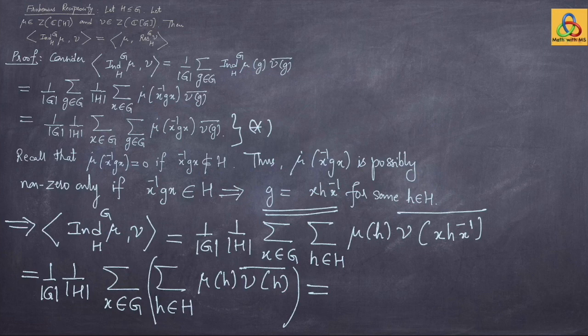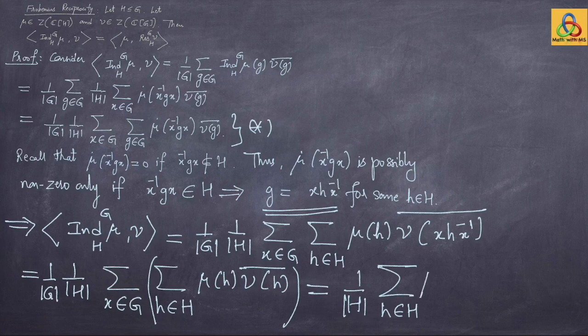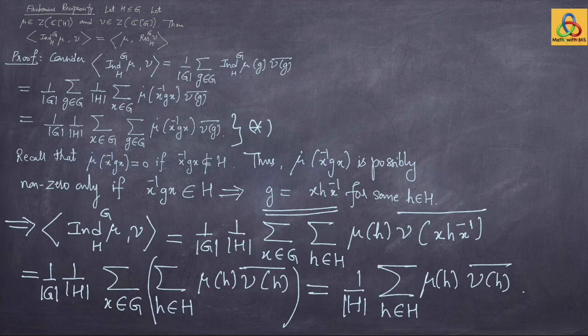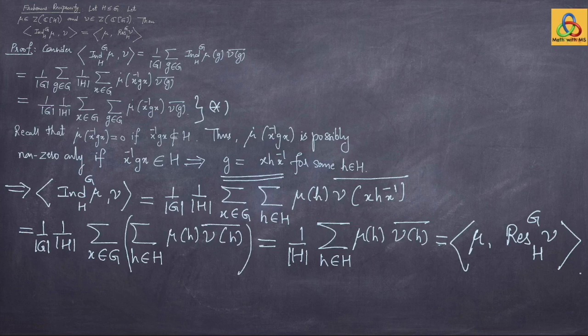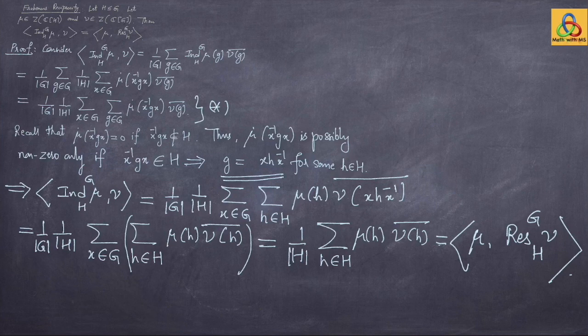What remains is (1/|H|) times the sum over h in H of mu(h) times nu(h)-bar. But this is simply the inner product of mu with the restriction of nu from G to H — since we are varying h only in H. This proves the beautiful result called Frobenius reciprocity, which will be extremely helpful when we define induction of a representation.